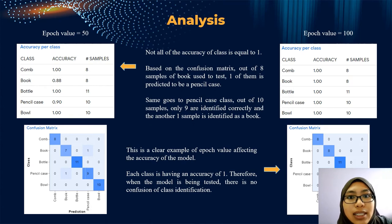we have a few classes where the accuracy is not equal to 1, meaning that some of the samples are misidentified as another item. So of eight samples of the book, one of them is misidentified as a pencil case. We can also refer to the pencil case model. As you can see, out of 10 samples, we have one item that is misidentified as a book.